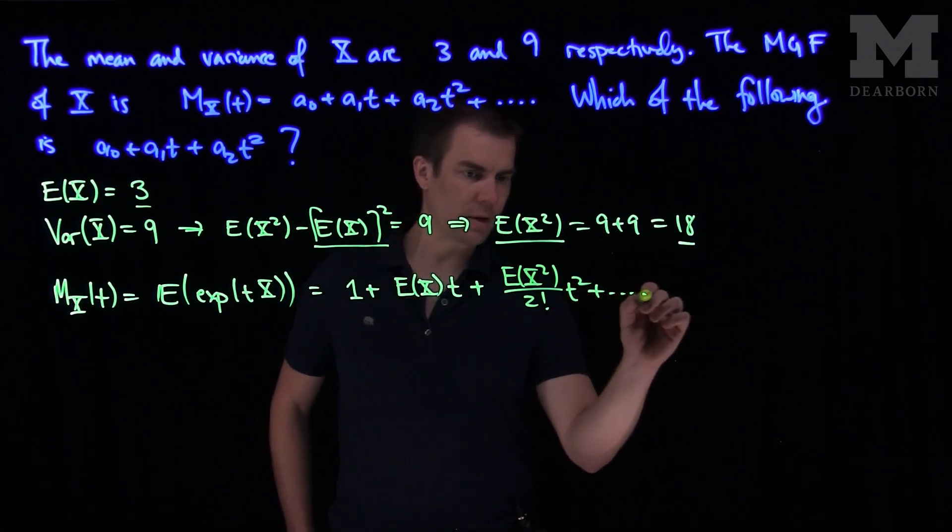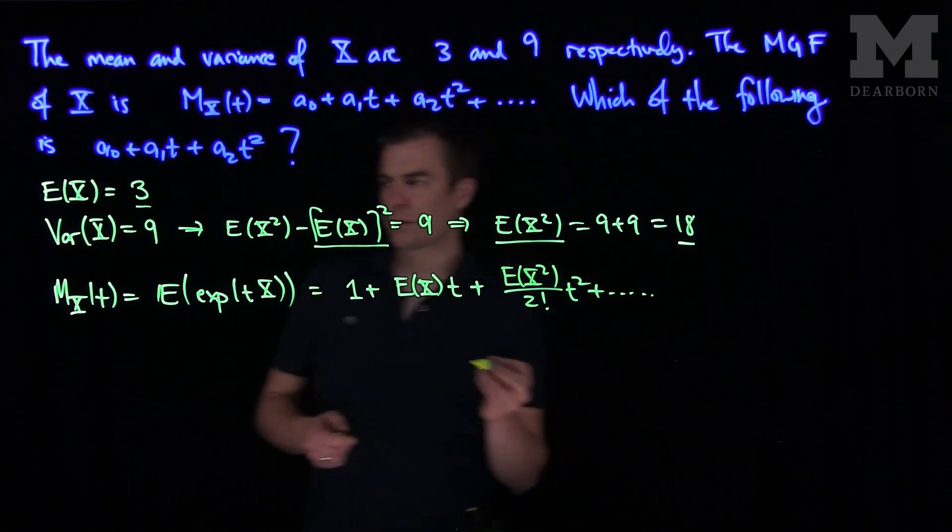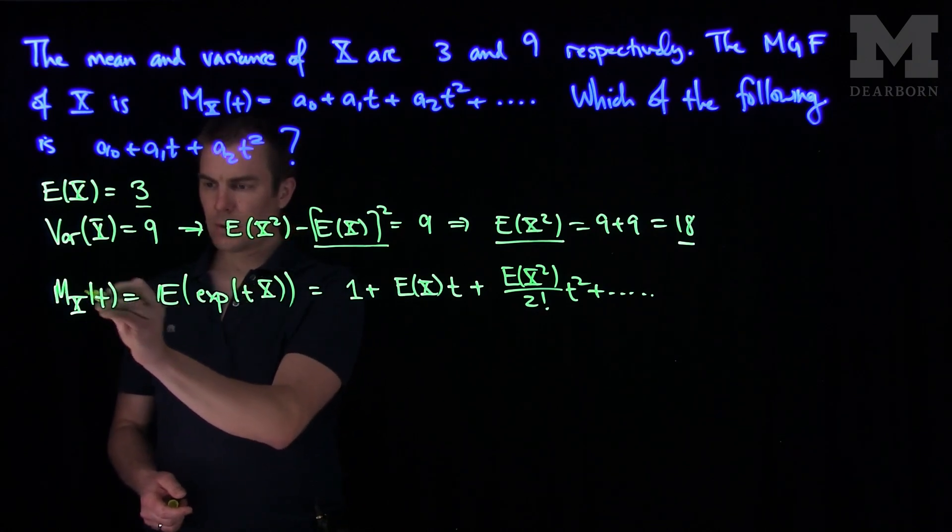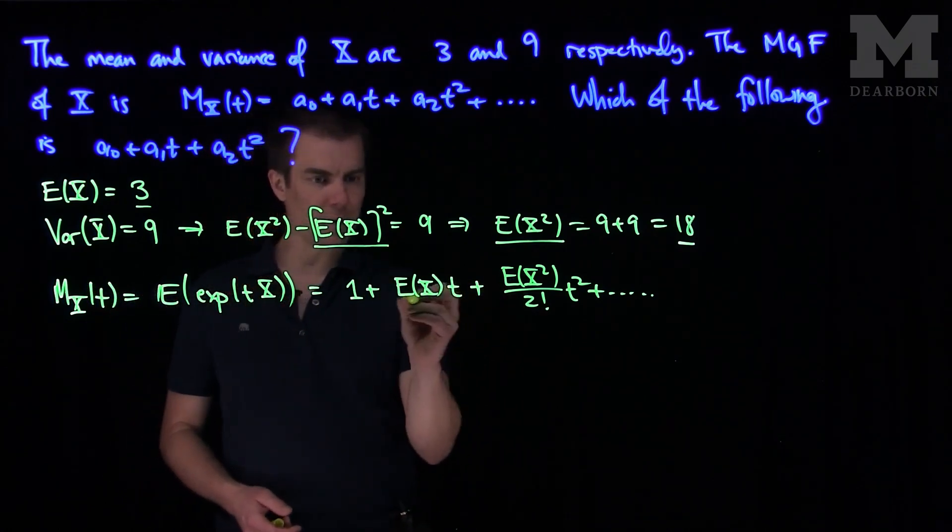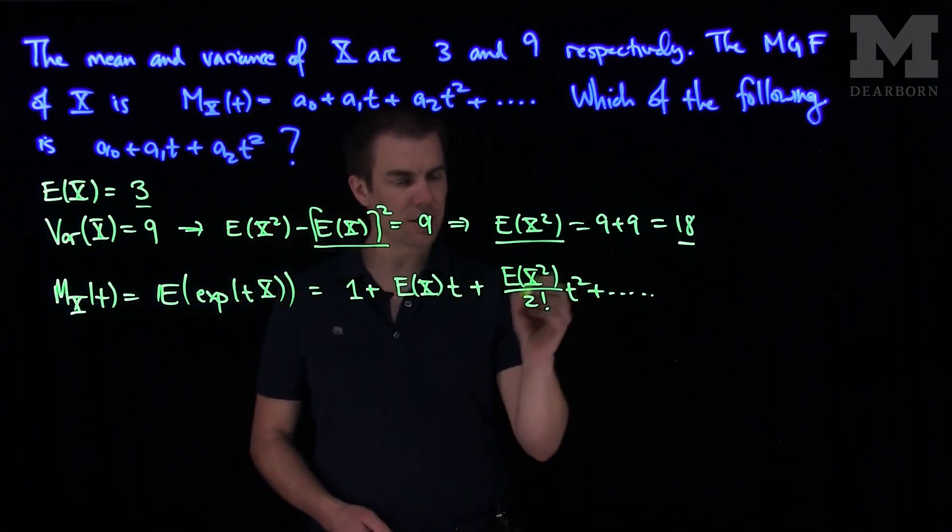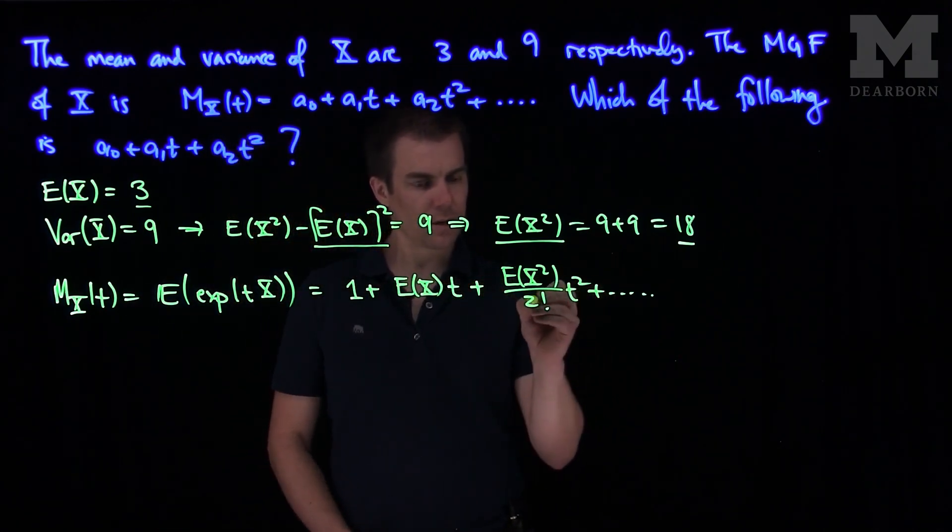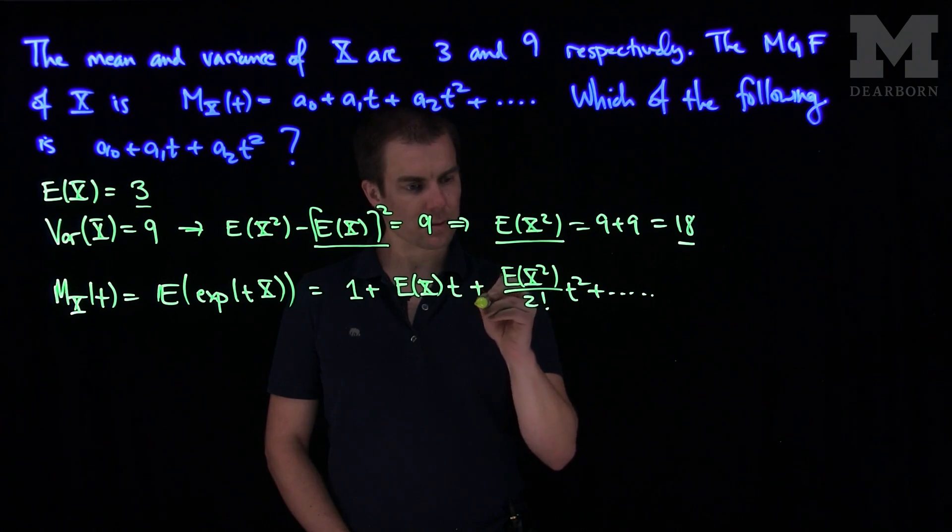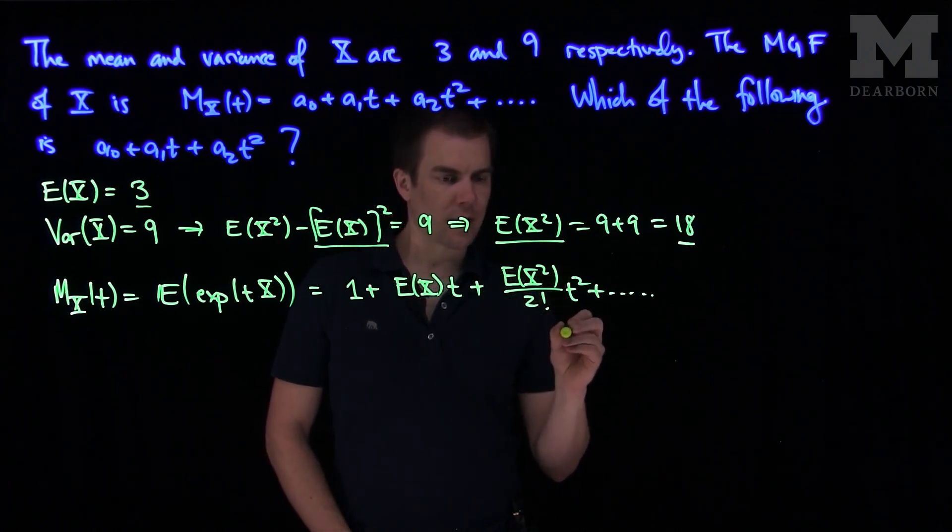Because if I did the first derivative with respect to t of this and plugged in 0, I would get the expected value of X. If I did the second derivative of this thing, I would have 2t times 2 and that would cancel out.